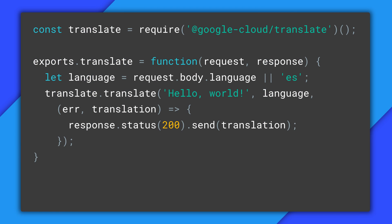Here's a normal Node.js function with two parameters, request and response. The incoming request is automatically parsed for JSON body data, HTML form post data, and URL query string values.